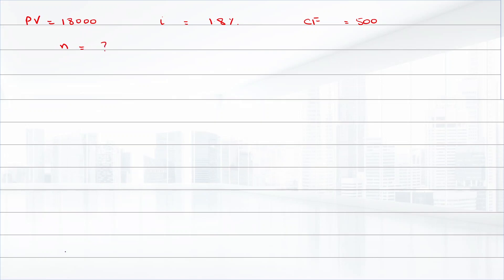To calculate n, the formula that is being used is: n equals log of 1 minus present value times i divided by cash flow, raised to power minus 1, divided by log of 1 plus i.